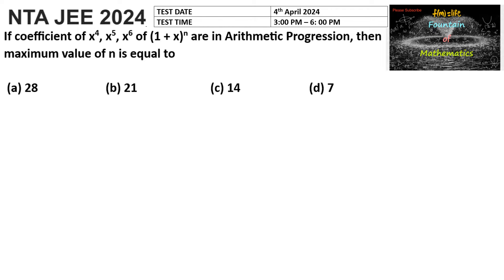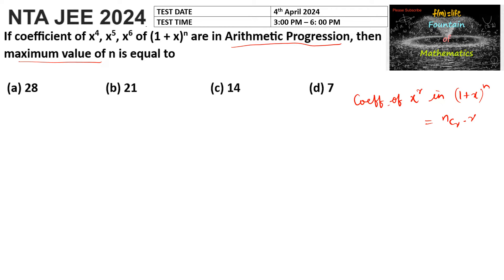If the coefficients of x⁴, x⁵, and x⁶ in (1+x)ⁿ are in arithmetic progression, then the maximum value of n is equal to? We know that the coefficient of xʳ in (1+x)ⁿ is directly nCr. So the coefficient of x⁴ is nC4, coefficient of x⁵ is nC5, and coefficient of x⁶ is nC6, and they are in arithmetic progression.